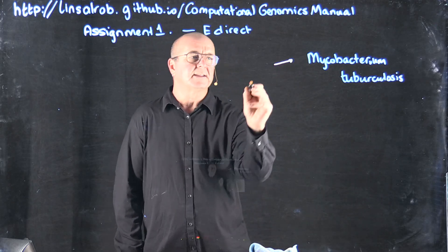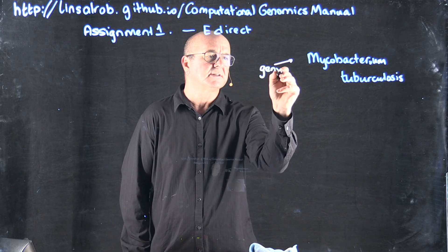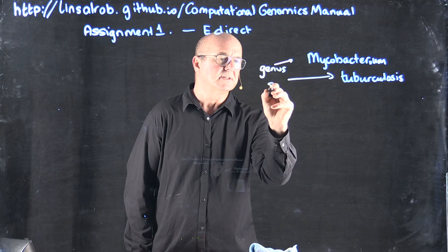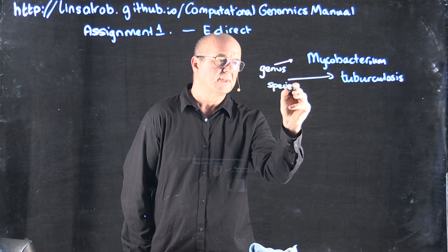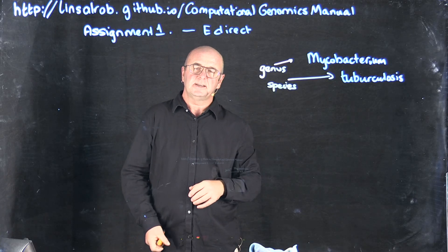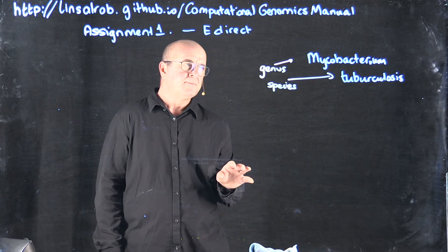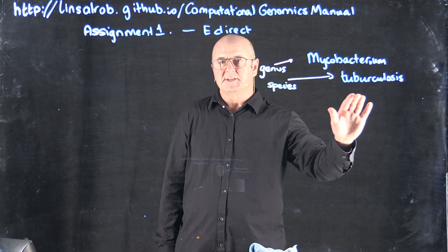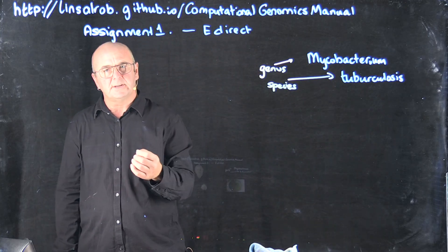When we talk about names like this, this is the genus and this is the species. So the file I've given you has about 70 different bacteria listed as genus and species.